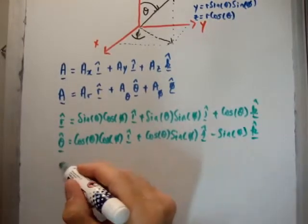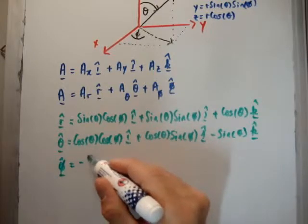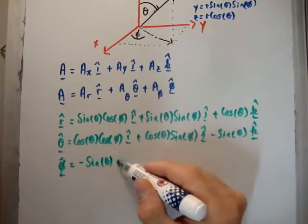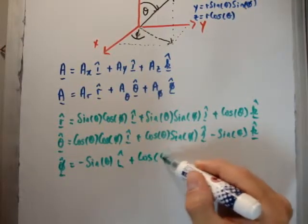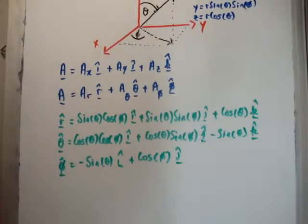And finally, phi hat, the azimuthal angle, is negative sin phi in the i hat direction, plus cos phi in the j hat direction. There is no k hat component. So now we're able to write an arbitrary vector A, capital A, in terms of the unit vectors in spherical coordinates.